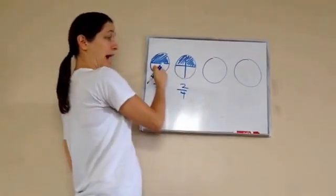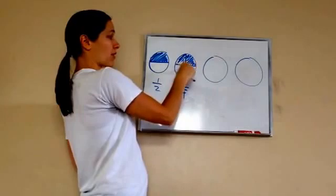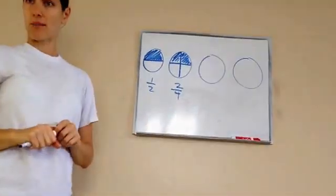Now it still means a half because it's half of the pizza. But because I broke it up into fours, two of the four is what makes up the half, right?